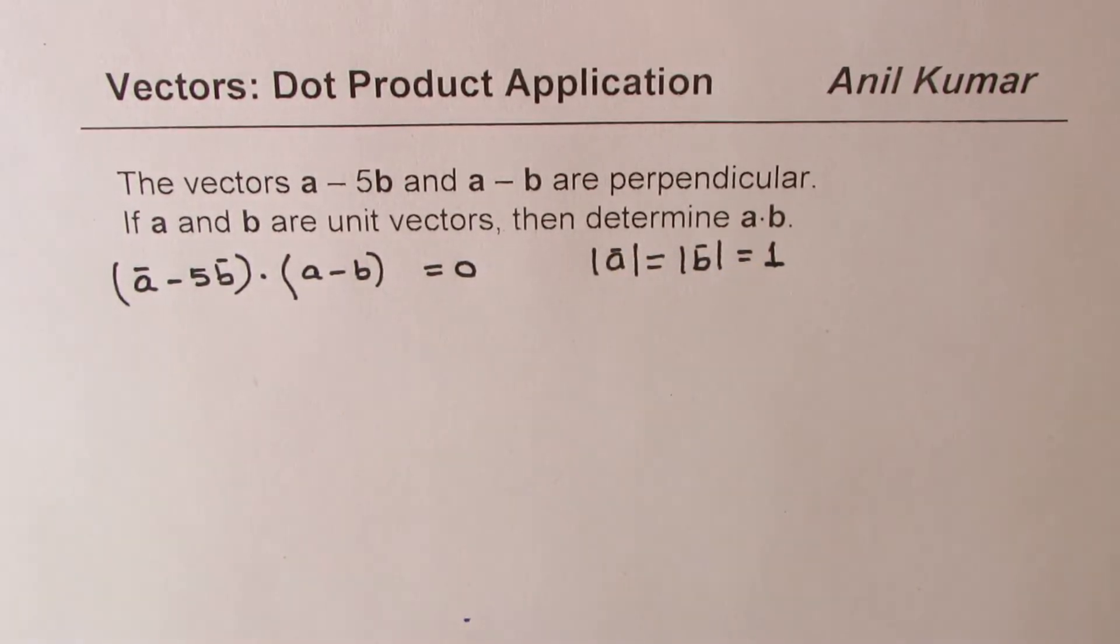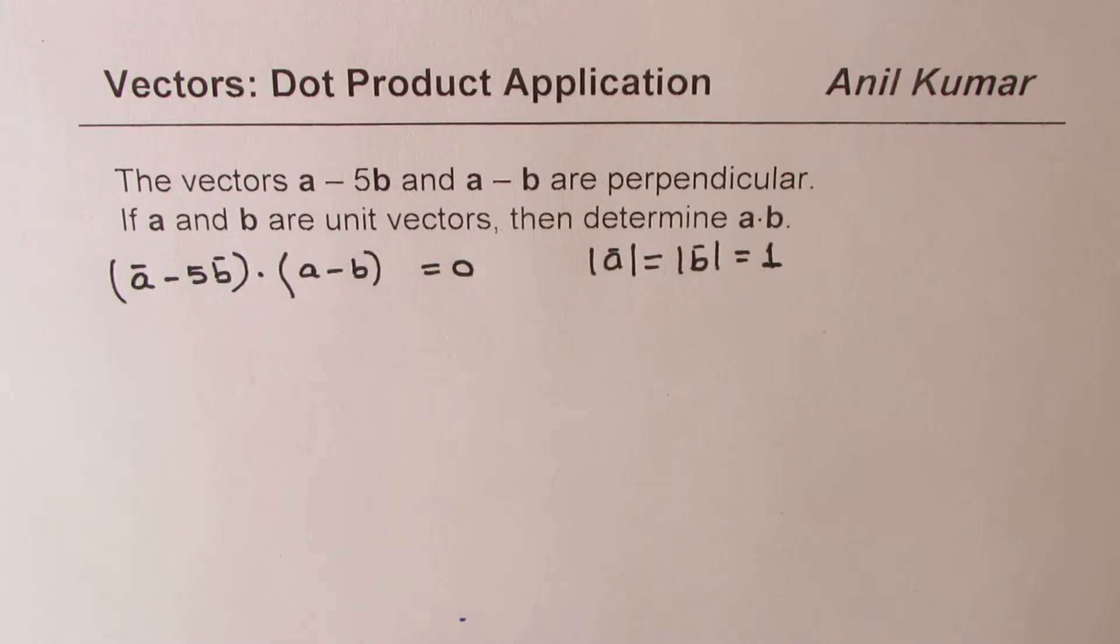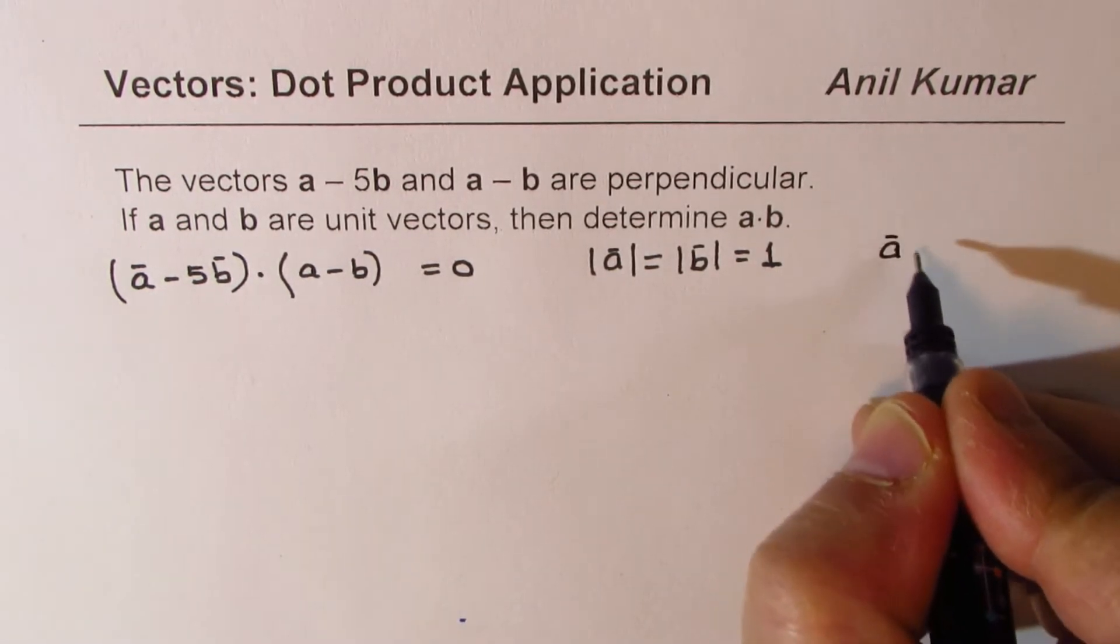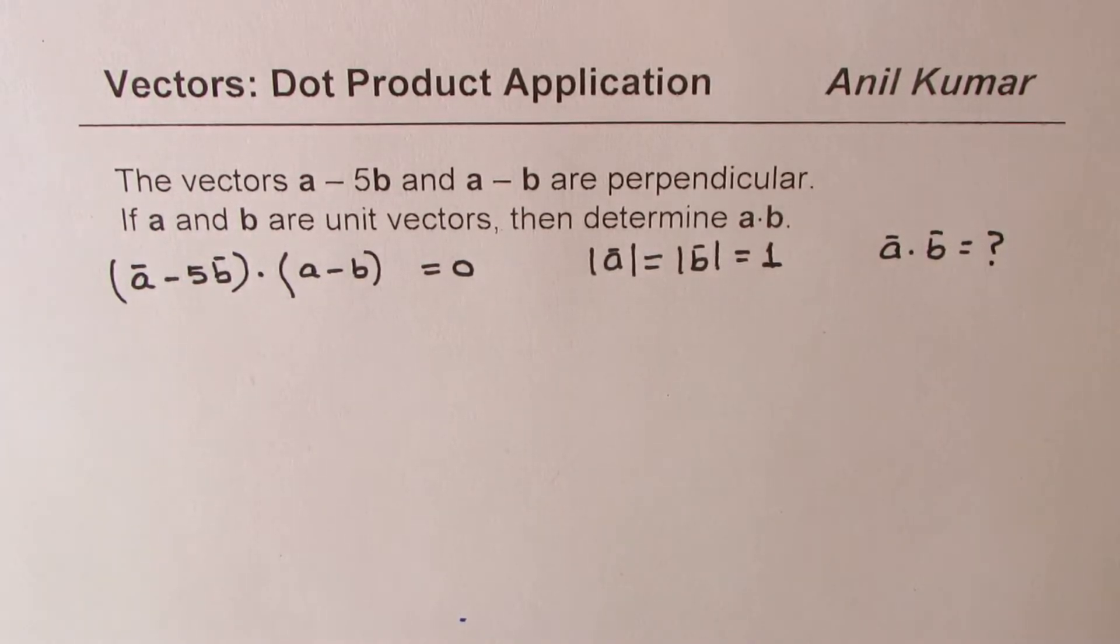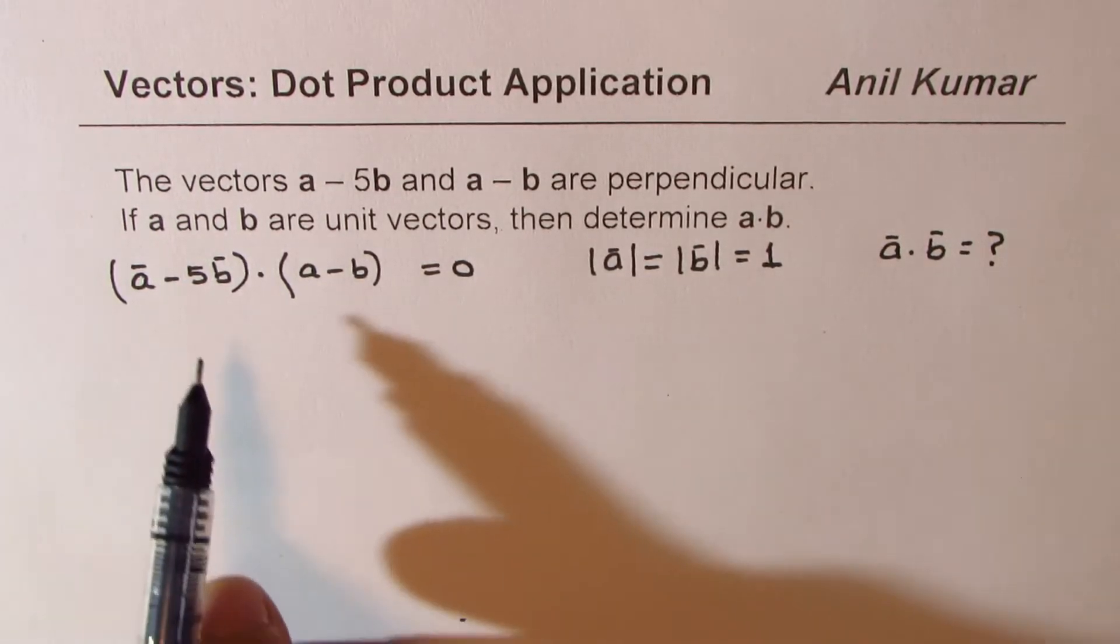What we need to find is what is A dot B. This is what we need to find. So let's begin with what is given to us.